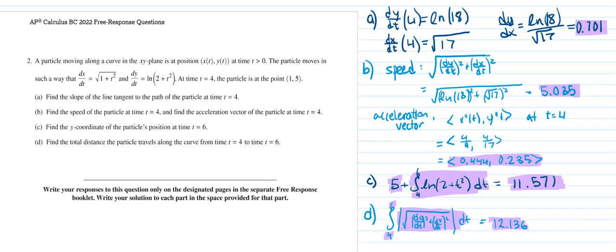Part A asks for the slope of the line tangent to the curve at t equals 4. That would be dy/dx, and we're given dy/dt and dx/dt. I plugged 4 into both equations and then divided: dy/dt over dx/dt. Using my calculator, the answer highlighted in purple is 0.701.